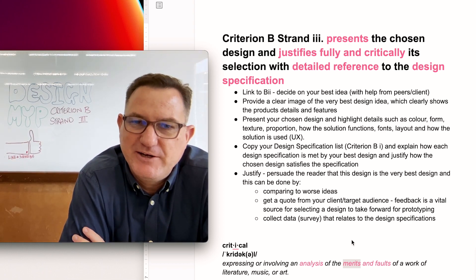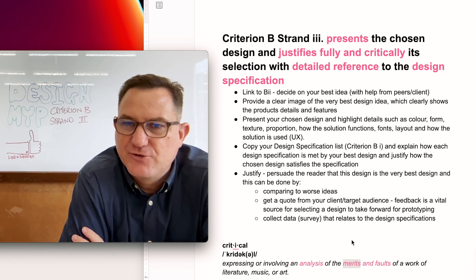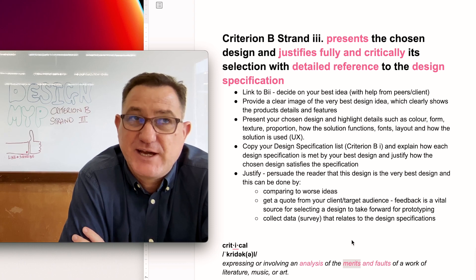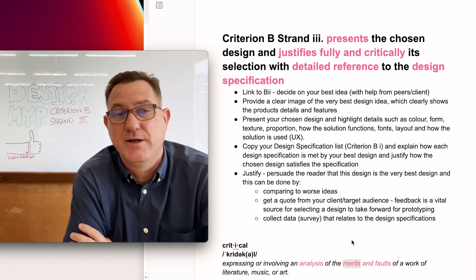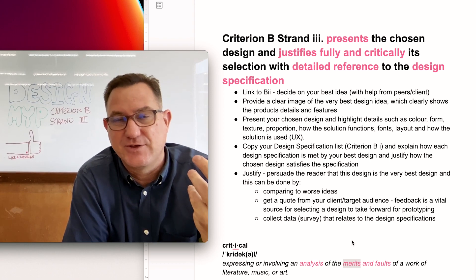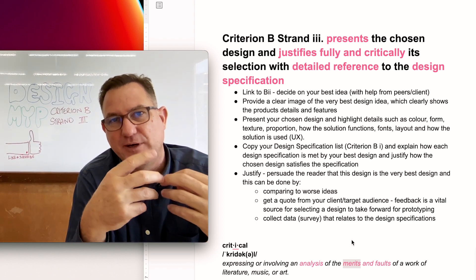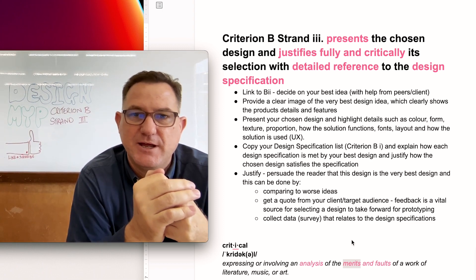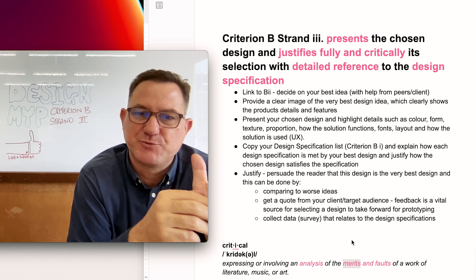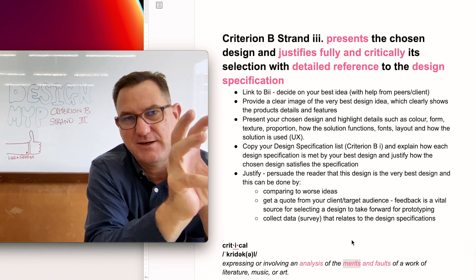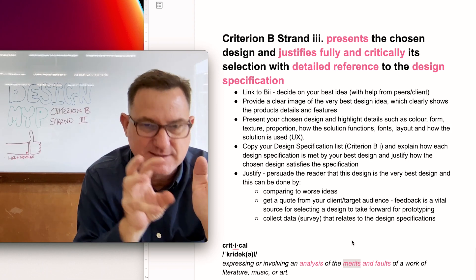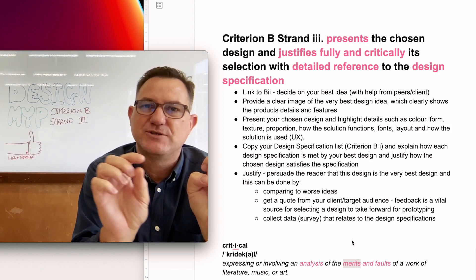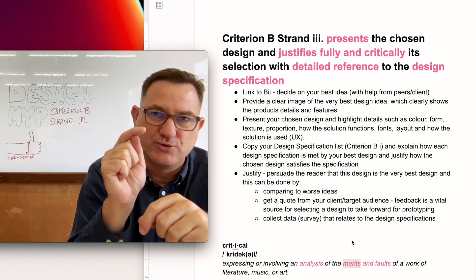You're justifying fully and critically with detailed reference to the design specifications. Design specifications were done in Strand 1, so we need to revisit those. You can see how Strands 1 and 2 are very much connected to Strand 3. Go back to your design specifications from Strand 1, copy them, and paste them into Strand 3 — then use those design specifications to justify your selection.